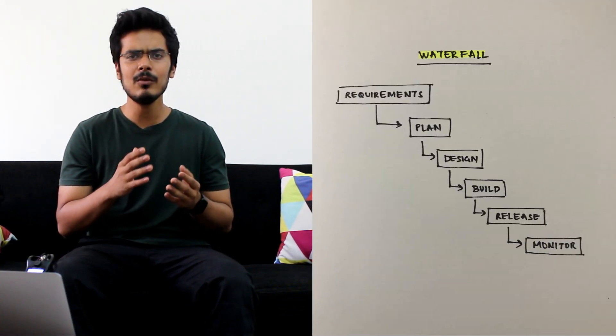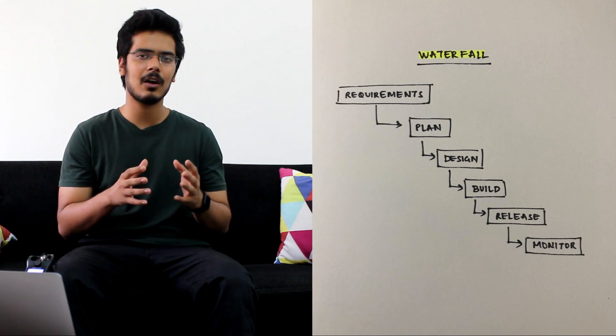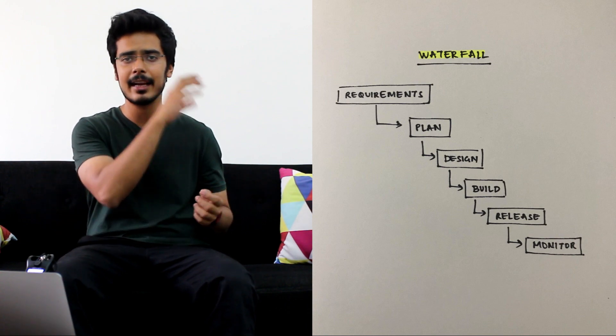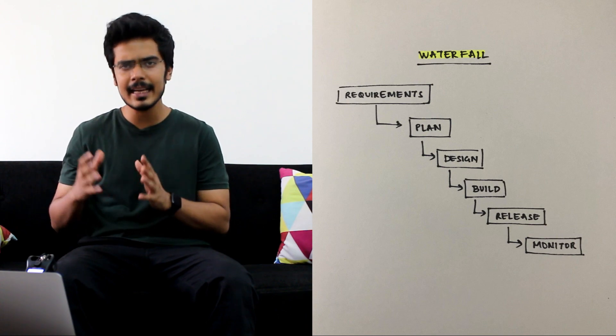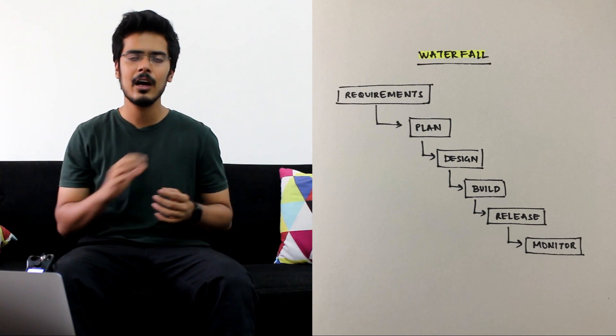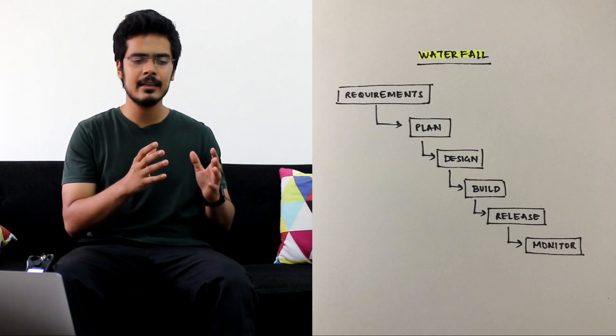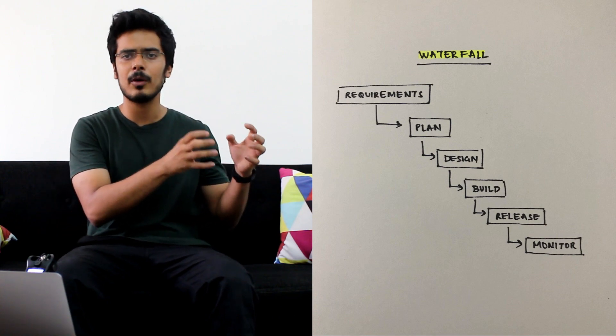Let us begin by discussing the two most important product development methods out there: waterfall and agile. Now in the waterfall, as the name suggests, all the parts of the product development process right from gathering requirements, planning, designing, building, releasing and monitoring, all of this is done basically step by step and each of the steps could probably take months.